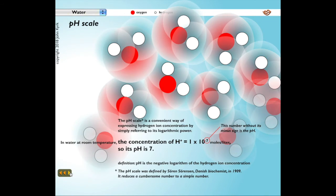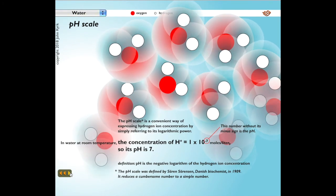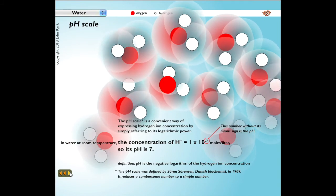The pH scale is a convenient way of expressing hydrogen ion concentration by simply referring to its logarithmic power. In water, at room temperature, the concentration of hydrogen ions is 1 times 10 to the minus 7th moles per liter, so its pH is 7. In other words, the minus 7 exponent is the number we use for pH. We just take its minus sign away. pH is the negative logarithm of the hydrogen ion concentration. The pH scale was defined by Søren Sørensen, a Danish biochemist, in 1909. It reduces a cumbersome number to a simple number.